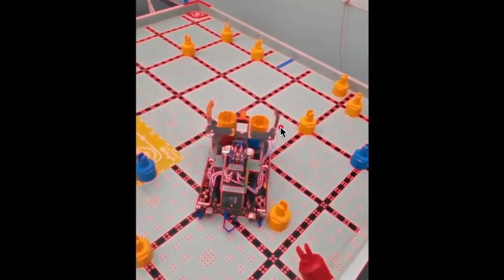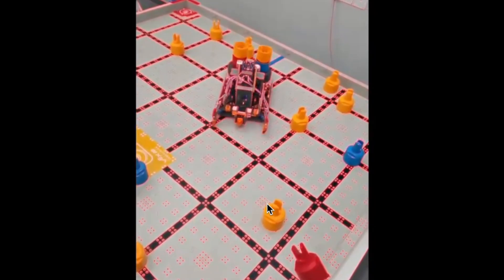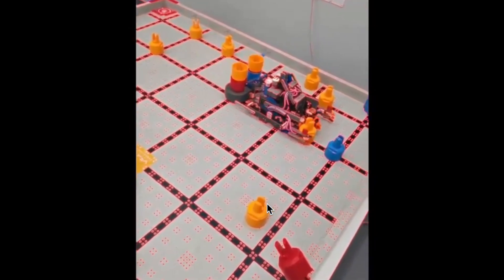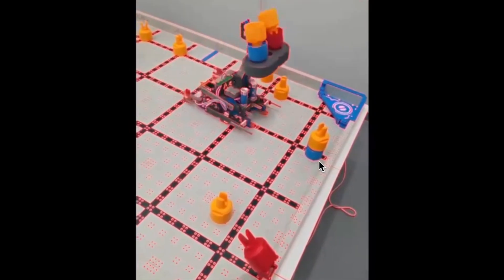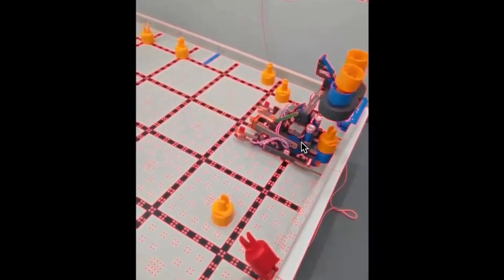Sometimes the robot might be over here, or sometimes the robot might be over here. Having a third failsafe really helps add to the consistency. This is just like normal stacking. We see those extended aligners.